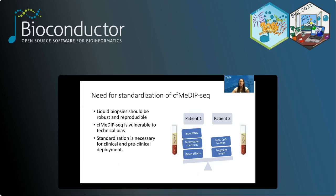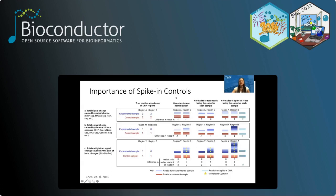There is a need to standardize CF-MeDIP-seq. Our goal is to make liquid biopsies robust and reproducible for clinical use. CF-MeDIP-seq is vulnerable to technical bias — if you want to compare Patient 1 and Patient 2, you might have biased results based on GC percent, CpG fraction, batch effects, etc. We need to correct for these to analyze the data properly, and we're able to do this through the use of spike-in controls.